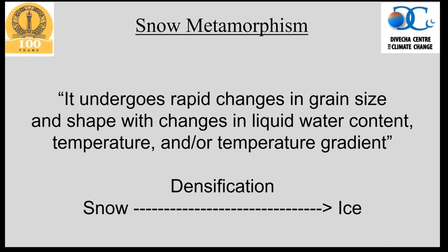Snow has very low density and as it goes through processes and gets converted into ice, there is significant change in physical characteristics. This rapid change in grain size, shape, liquid water content, temperature, and temperature gradient — leading to densification of snow — is known as snow metamorphism.